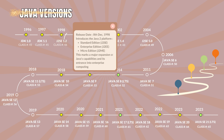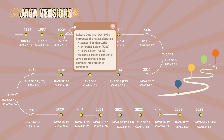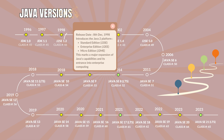Java 1.2 with the class file version 46. It was codenamed as Playground. It was released on 8th December 1998. The major features and enhancements are the introduction of the Java 2 platform — Standard Edition J2SE, Enterprise Edition J2EE, and Micro Edition J2ME. This marks a major expansion of Java's capabilities and its entrance into enterprise computing.